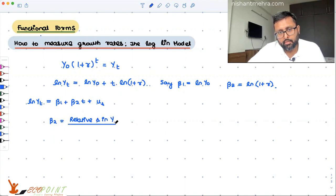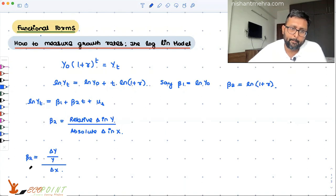Change in y due to the absolute change in x. I can also write this thing in this way: beta 2, so relative change in y could be written as delta y upon y. An absolute change in x could be written as delta x.